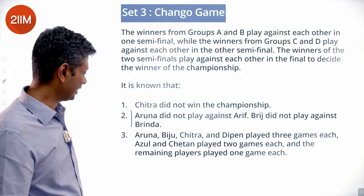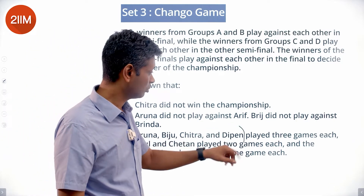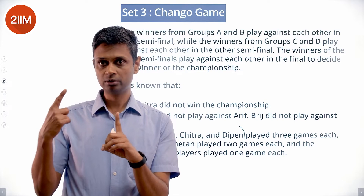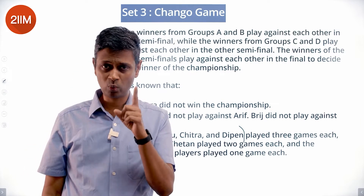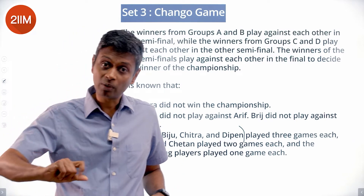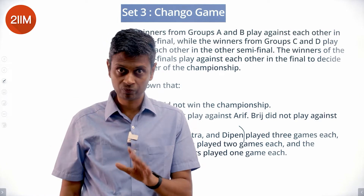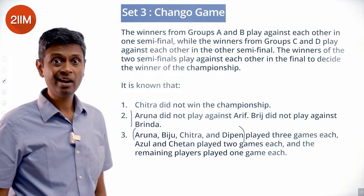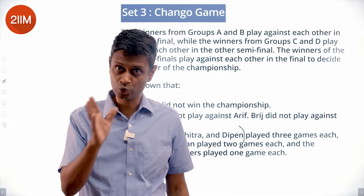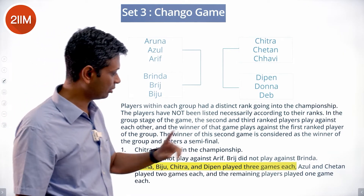Aruna, Biju, Chitra, and Dipen played three games each. Azul and Chetan played two games each, and the remaining players played one game each. This is a big giveaway — from a group, the top-ranked player plays one or two games. If you played three games, you must have won your group and played in the semi-finals.